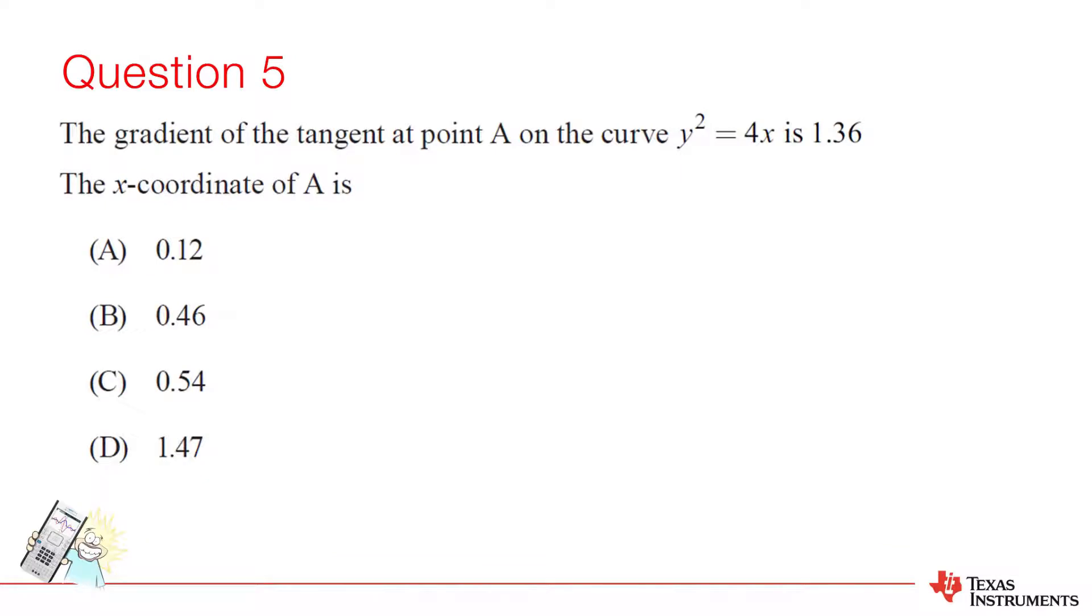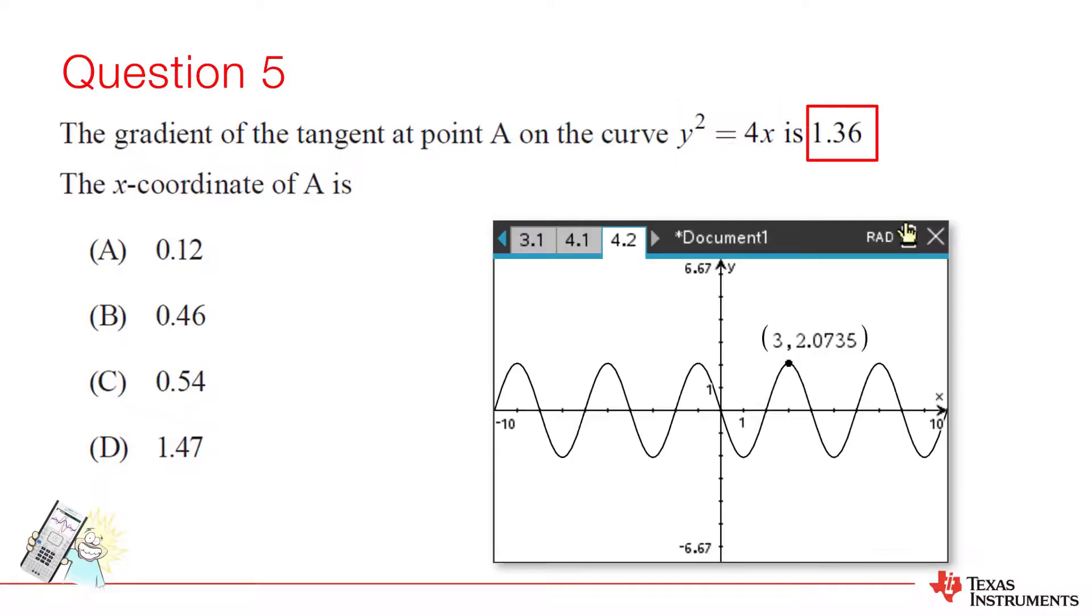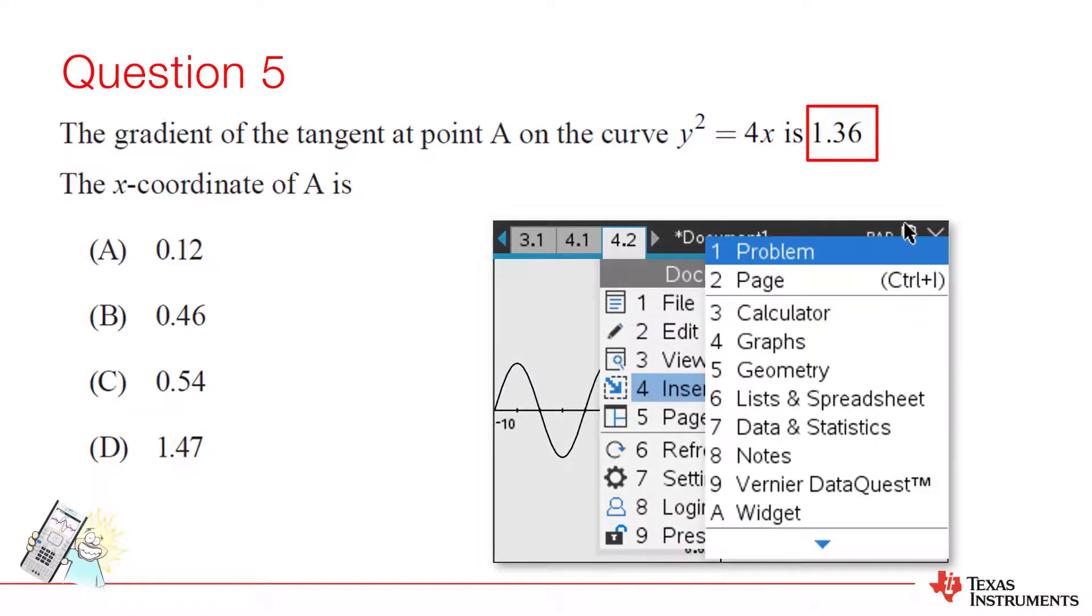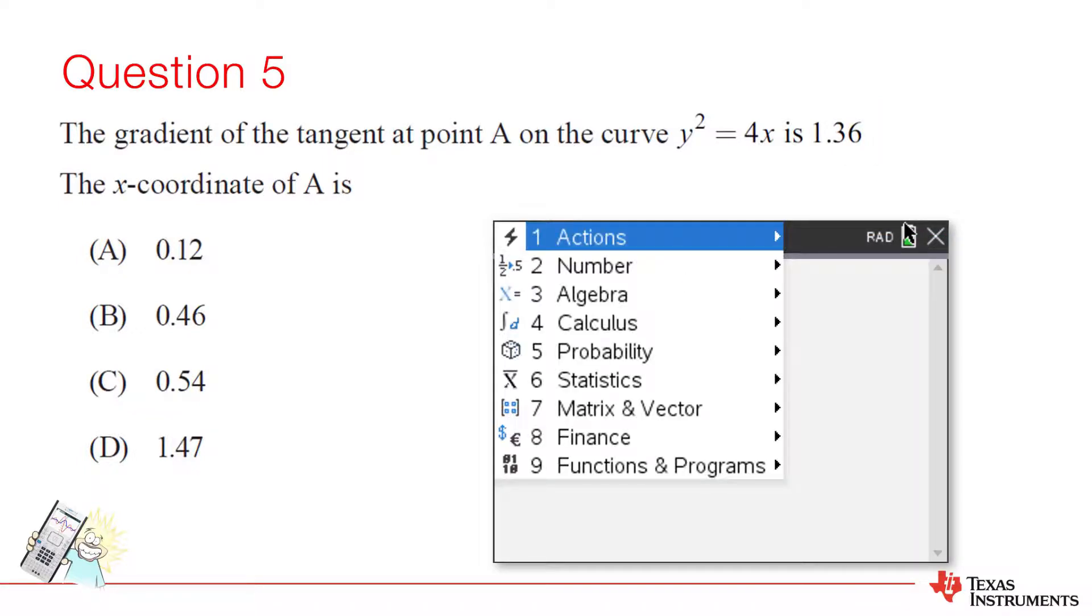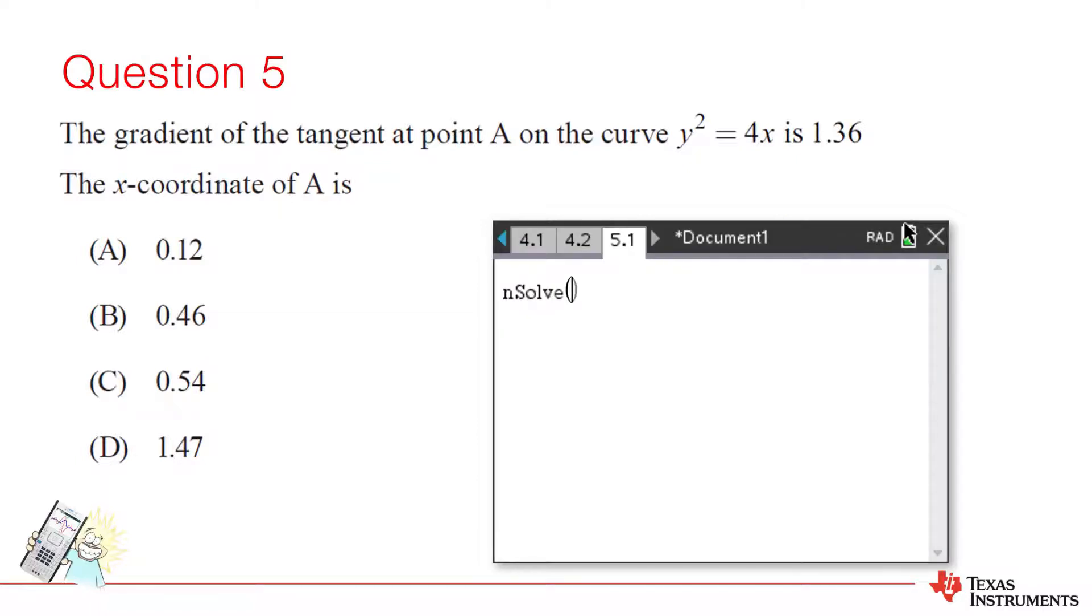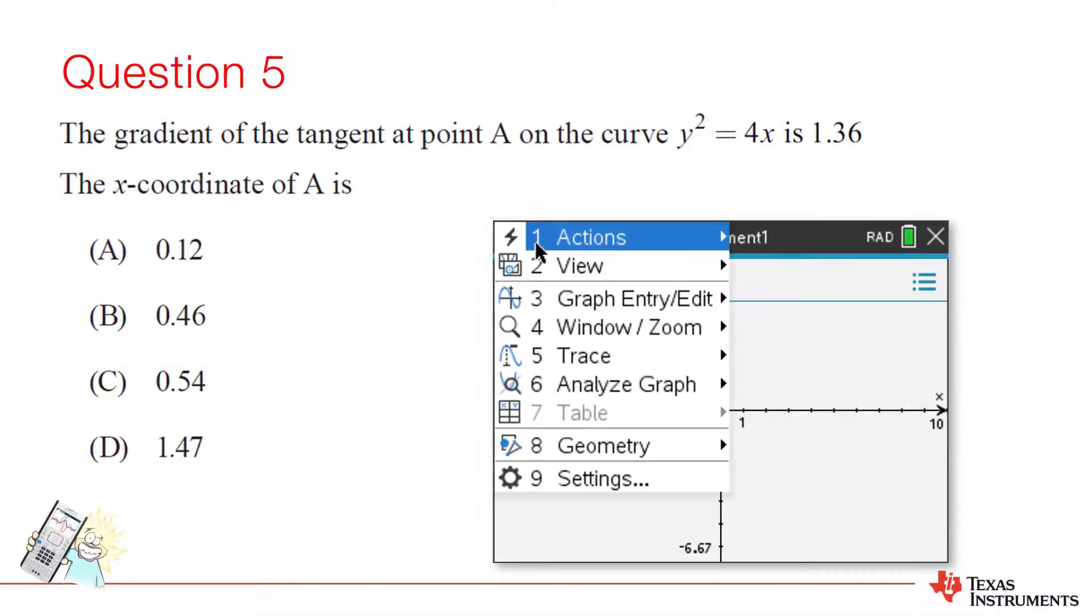Question 5. There are two distinct noteworthy items here. The first one is the equation expressed as y squared equals. The second item we are given is the gradient, rather than a point. So we could use implicit differentiation, however, in this example, the equation is quite easy to transpose. When the equation is transposed, be aware that we should generally consider the positive and negative square root. Whilst the negative square root doesn't form part of this solution, it may be relevant in other cases.